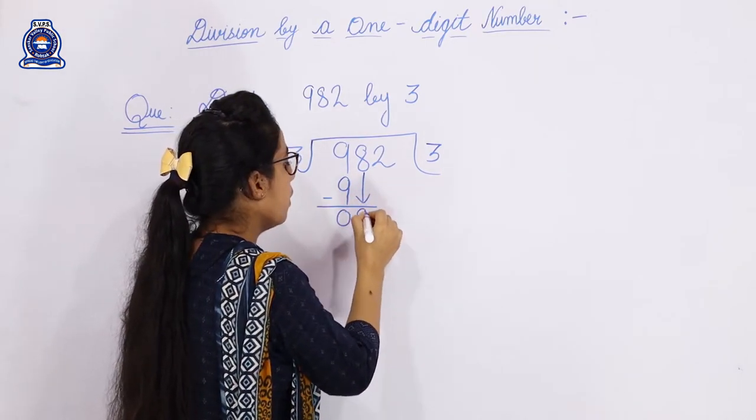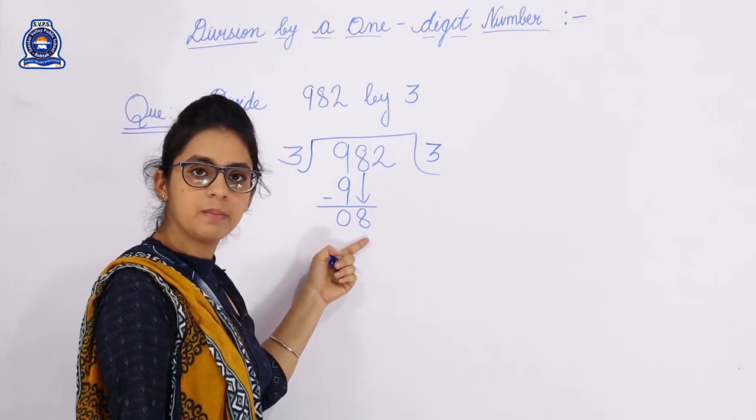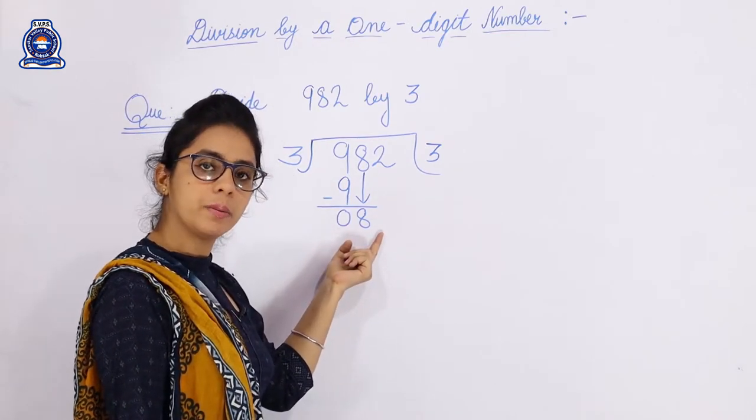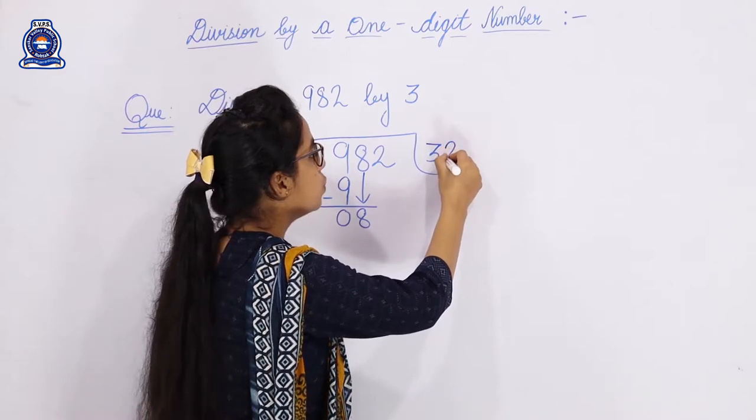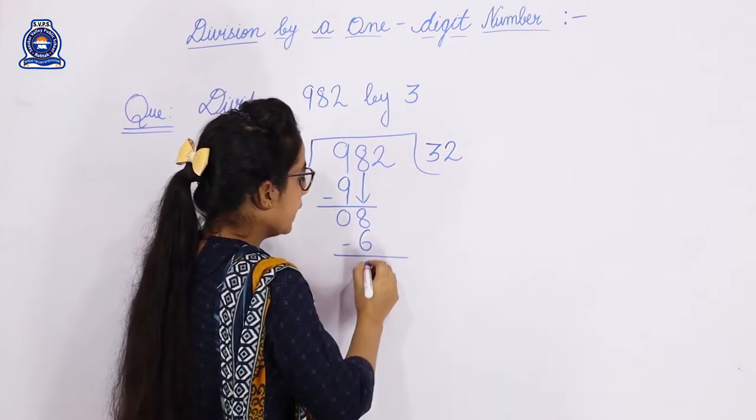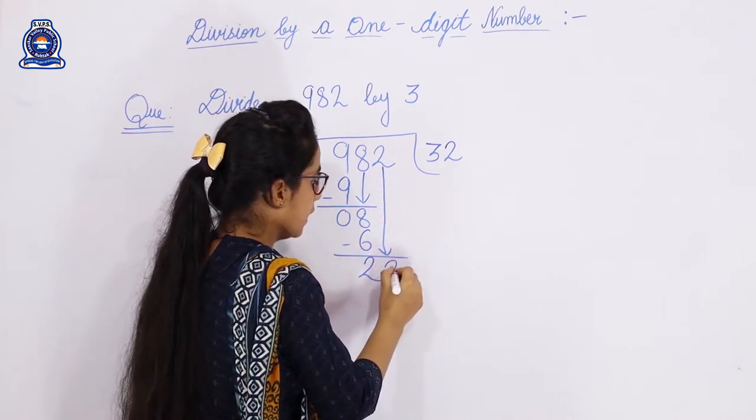Now for 8: 3 twos are 6. Since 3 threes are 9 which is bigger than 8, we use 3 twos are 6. Then we subtract 8 minus 6 equals 2. We carry the 2, making 22.